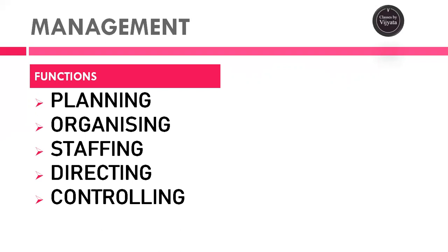Controlling — checking whether there is deviation or not — is also a key managerial function. So there are five functions performed in management: planning, organizing, staffing, directing, and controlling. At every point, we need some sort of information in order to plan well, organize well, staff well, direct well, and control well.